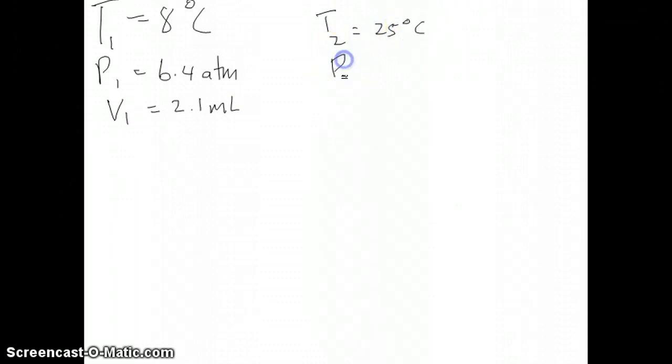So what we're going to do with these type of problems with ideal gas equation is just write out the conditions that we have before and after a particular process. In this case, we were told that we have our bubble. Initially, it has a temperature of 8 degrees Celsius, and this is T1. And then we have pressure 1, which is fairly high, 6.4 atmosphere. And we have the first volume, initial volume, 2.1 milliliters. And then we have temperature 2, which is 25 degrees Celsius. And we have pressure 2 at the surface of the lake, which is just 1 atmosphere. And the question that we're asked is volume 2.